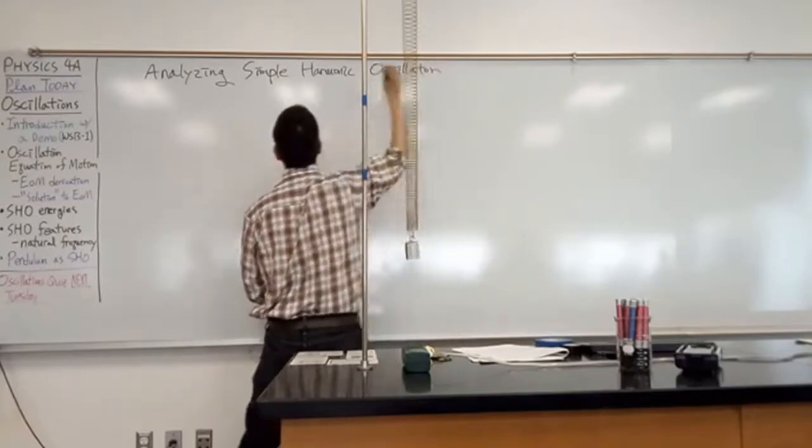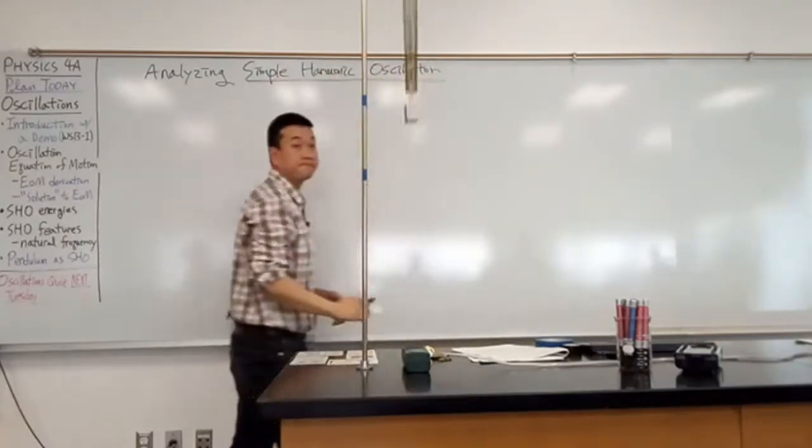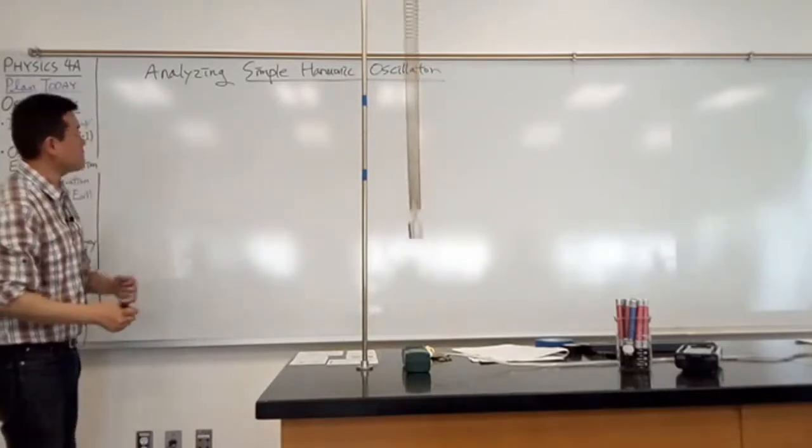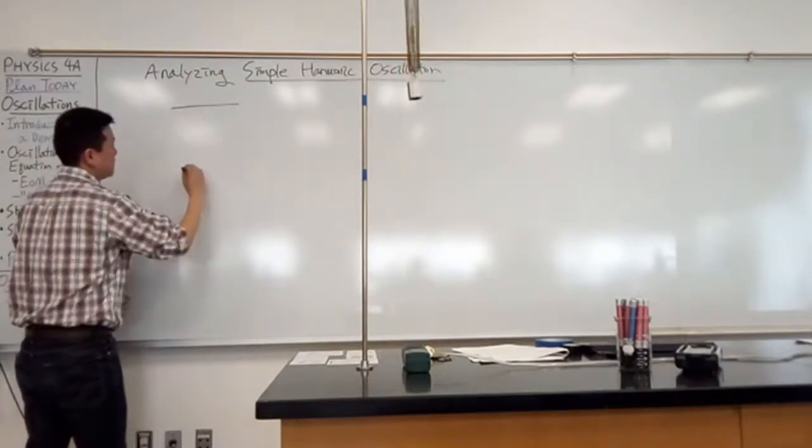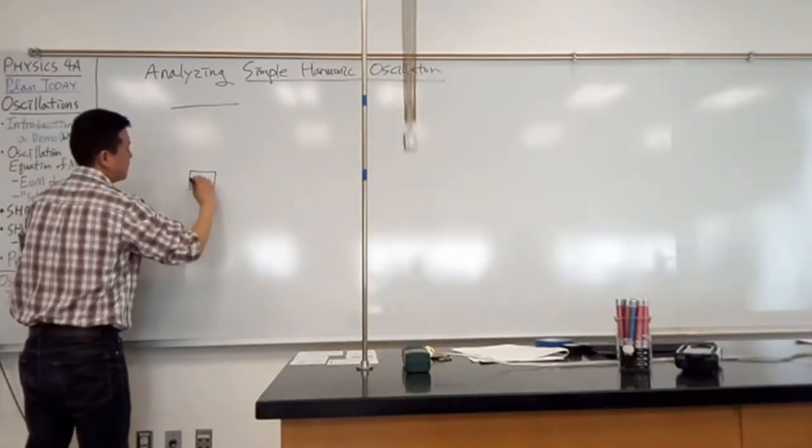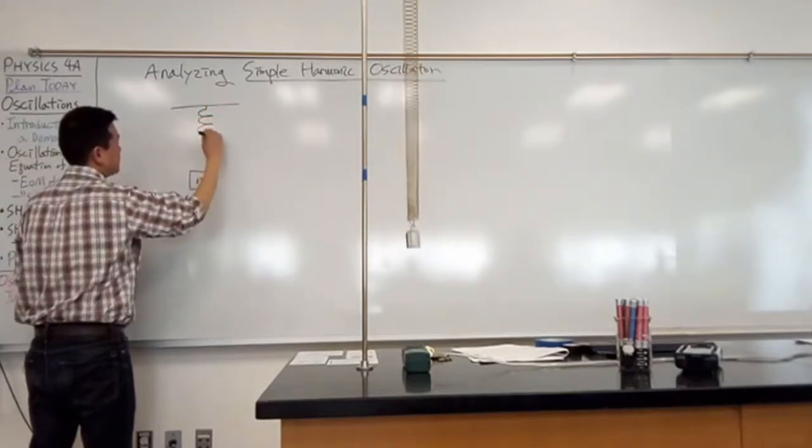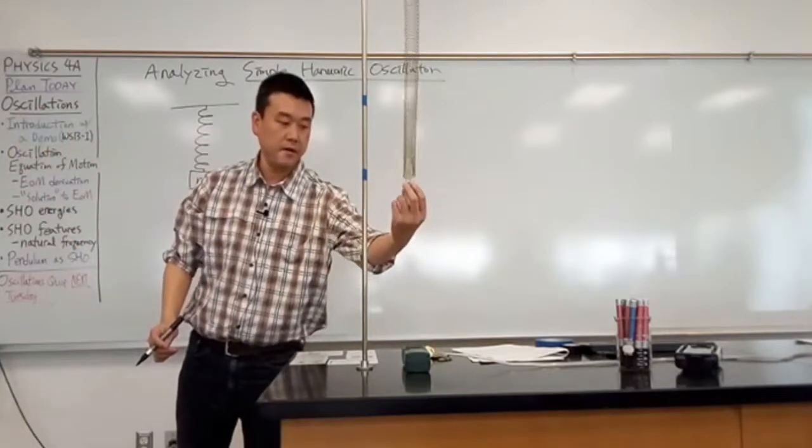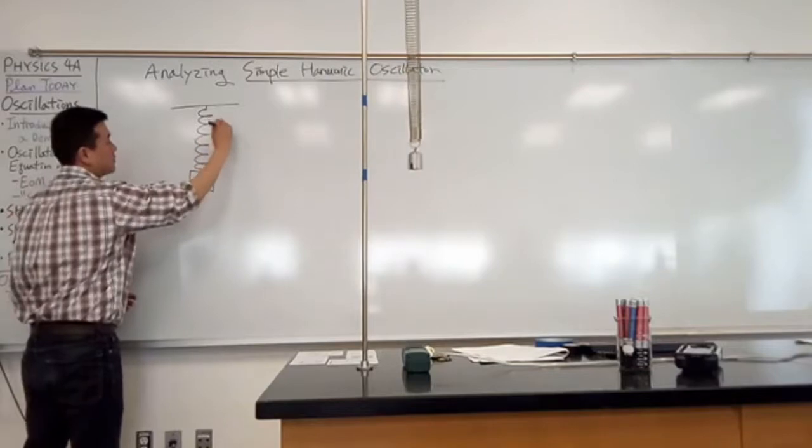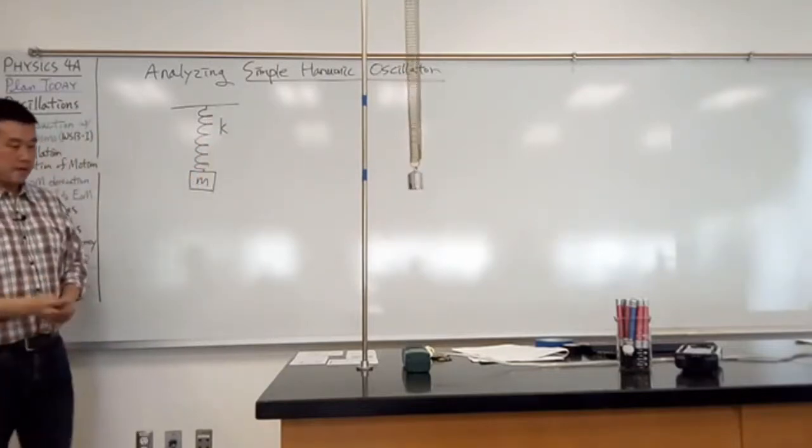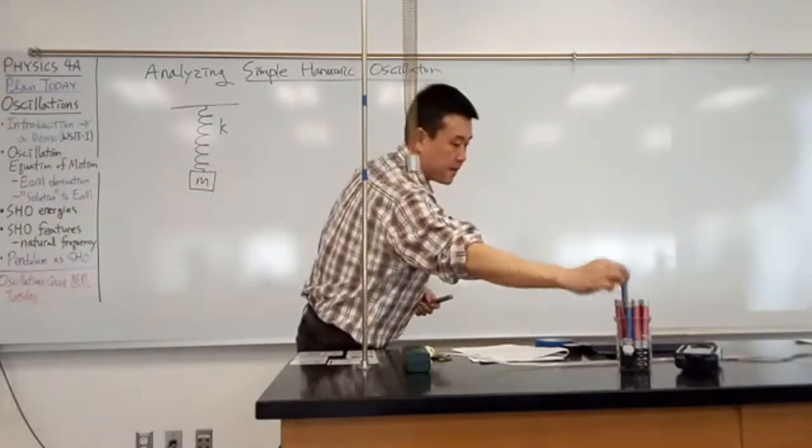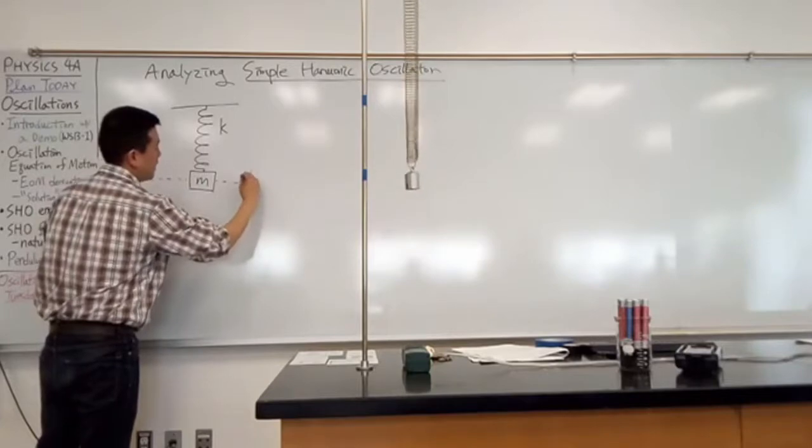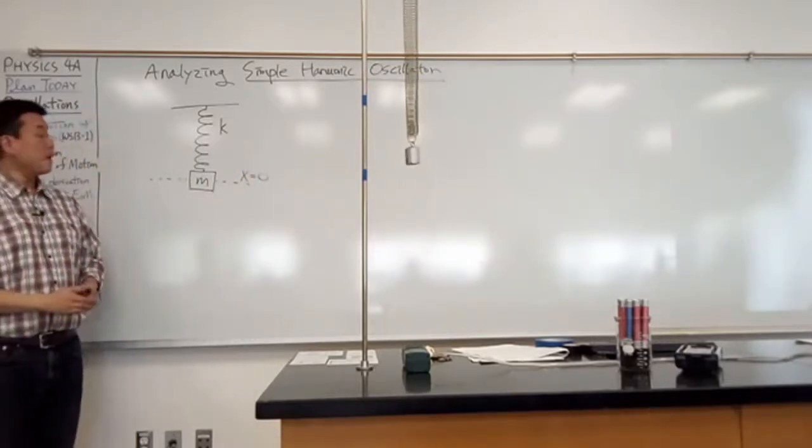So analyzing a simple harmonic oscillator. Let's just start out with this picture. Let's say I have some mass M that's hanging from a spring. I have to start specifying some of the parameters here. Let's say that the spring constant is K. And I guess I can say that this is my equilibrium position. So this is X equals zero.